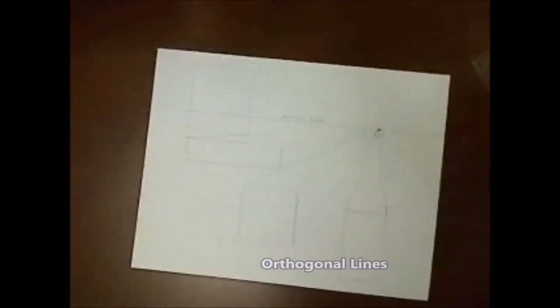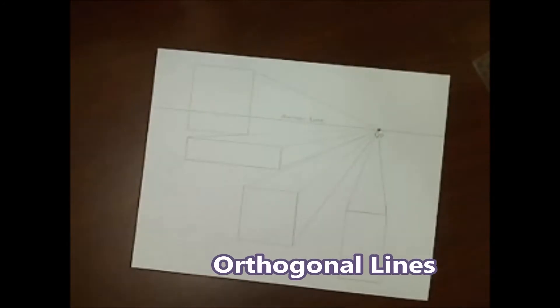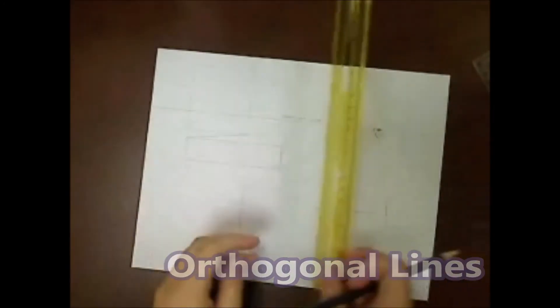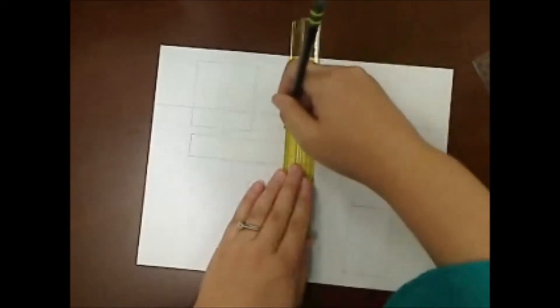Just connect the dots and now we have orthogonal lines—diagonals that converge on the vanishing point.